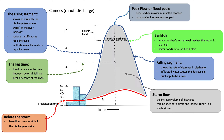Here depicted in red, we have before the storm, and base flow is responsible for the discharge of a river. Now let's take a look at peak flow, which is here at the top of our hydrograph, otherwise known as a flood peak. This occurs when maximum runoff is reached and it also occurs after the rain has stopped.